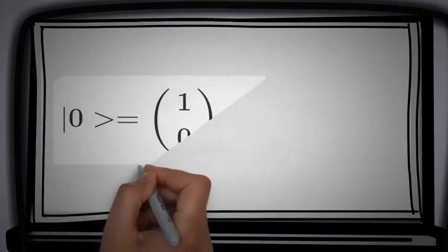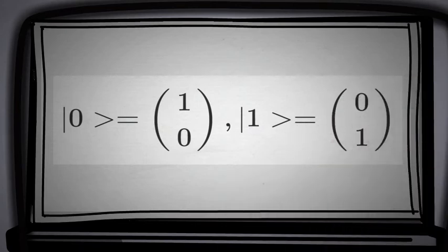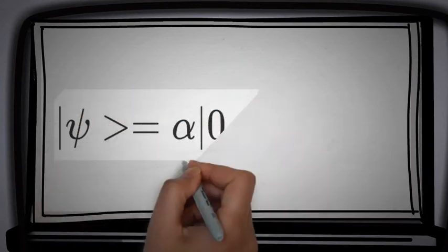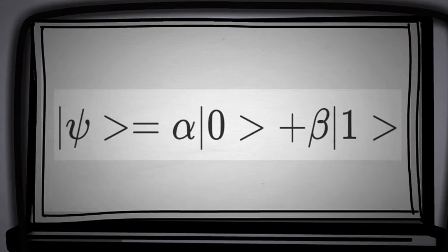The two levels 0 and 1 correspond to the following vectors. Arbitrary quantum state, defined by the formula, means that qubits can be in superposition, which is one of the fundamental concepts of quantum mechanics.